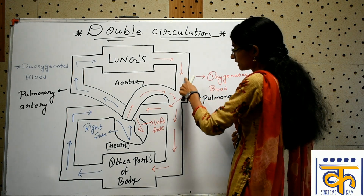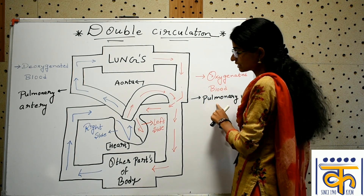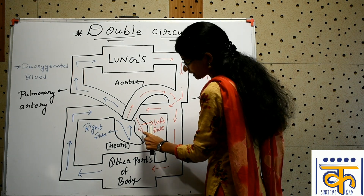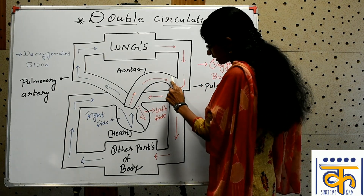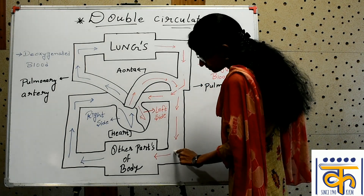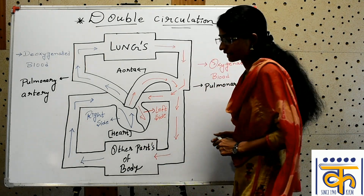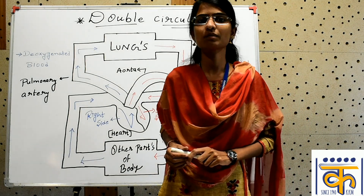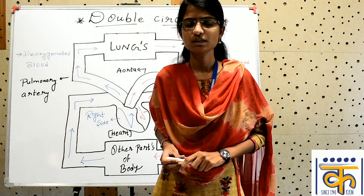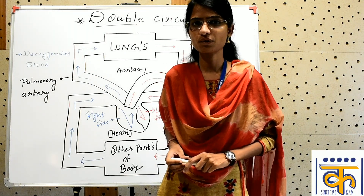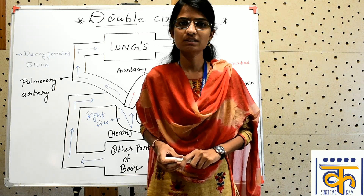Now the oxygenated blood from the lungs, with the help of pulmonary veins, goes to the left side of the heart. From there, with the help of the aorta, it reaches all the other body parts. This is how oxygenated blood is supplied to all the body parts with the help of the heart and lungs — that is all about double circulation.